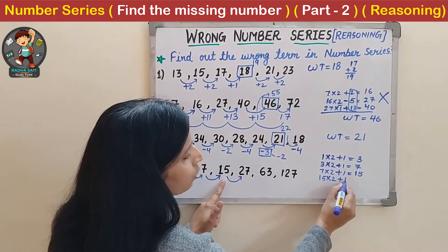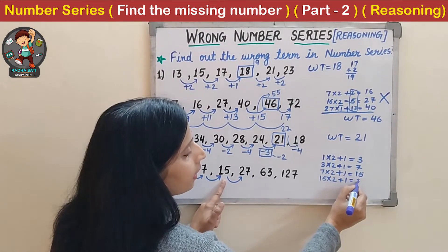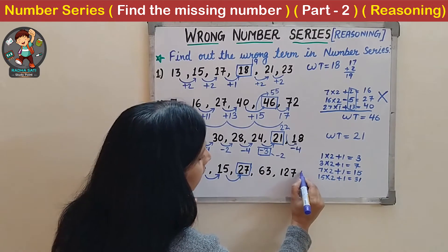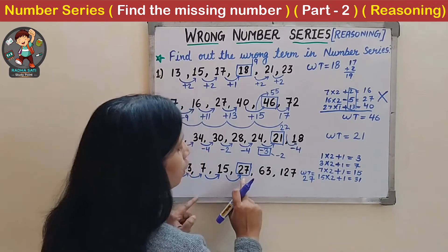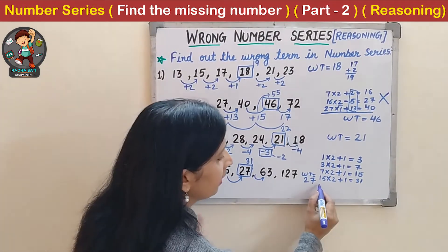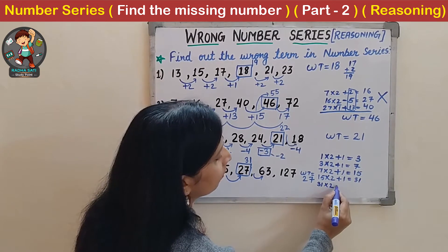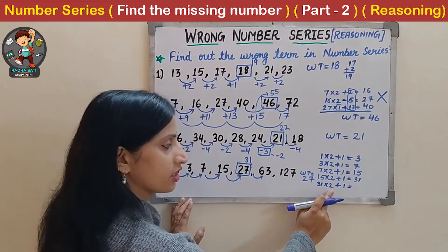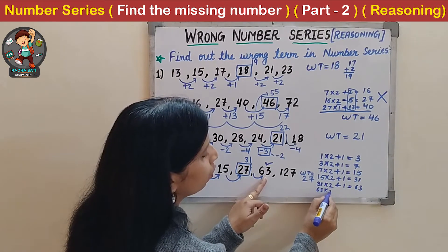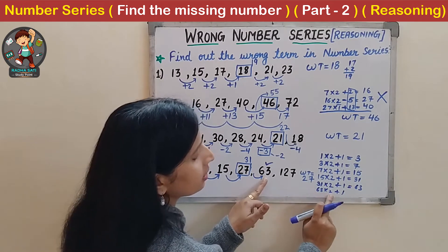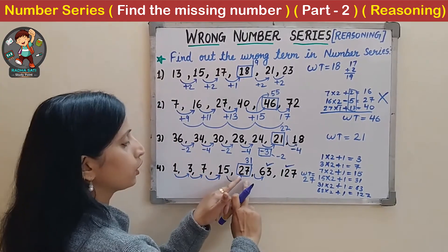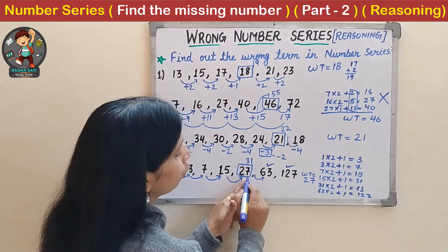Check for the next one: 15 multiplied by 2 plus 1 gives 30 plus 1 equals 31. But here the number given is 27. So 27 is the wrong number - the wrong term will be 27, instead of 27 it must be 31. Check: 31 multiplied by 2 plus 1 gives 63, and 63 multiplied by 2 plus 1 gives 127. So the wrong term is 27 and it should be 31.